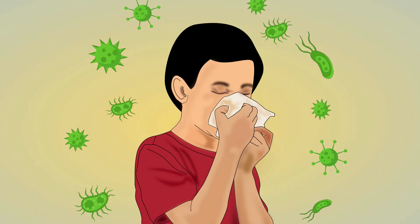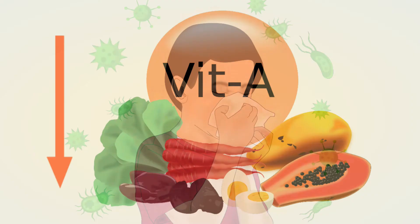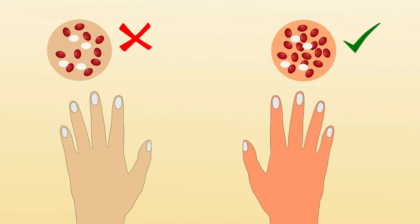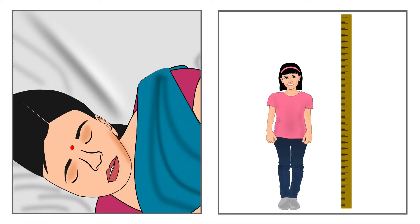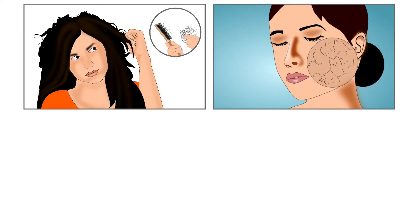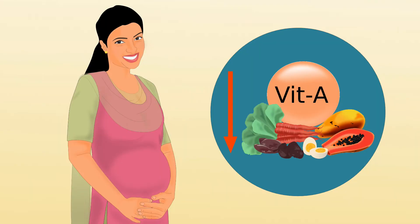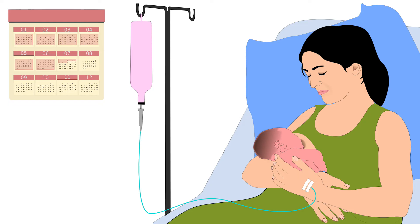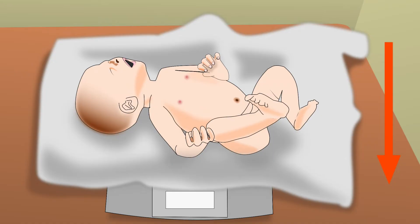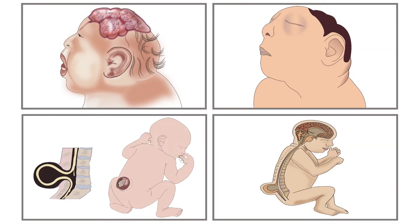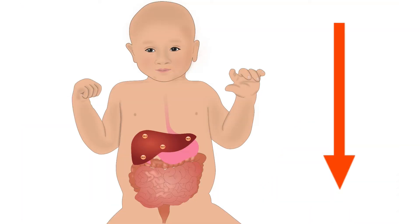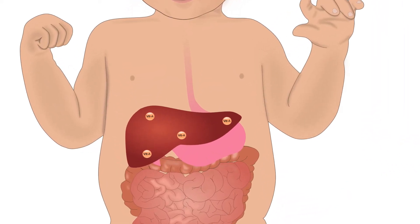Immunity also gets impaired due to deficiency. Those with vitamin A deficiency are also at a risk of anemia, fatigue, and stunted growth. Dry hair, dry skin, and pimples are other signs of vitamin A deficiency. In pregnant women, deficiency can result in preterm deliveries, low birth weight babies, birth defects, and reduced stores of vitamin A in newborn infants.